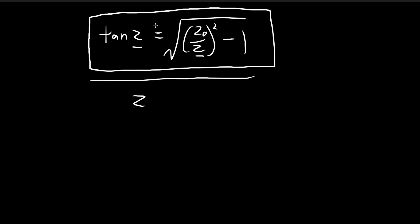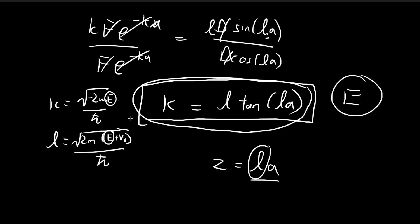This is a transcendental equation, so there is no closed-form solution. You have to graph it and look for intersection points — those intersection points give the values of z, from which you can deduce the allowed energy levels E.